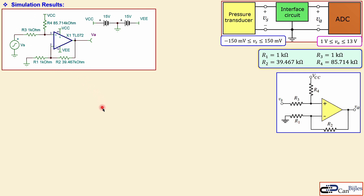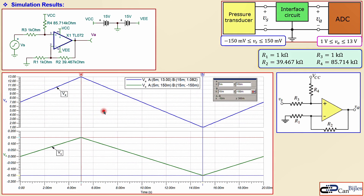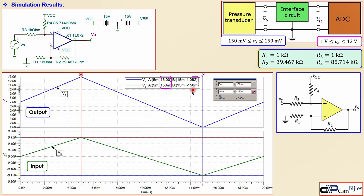Now let's look at the simulation results. This is the circuit in the simulator using the actual model of the op-amp TL072, with VCC = 15 V and VEE = −15 V, along with VCC for the resistor network. In the plot, the green trace is our input and the blue trace is the output of the interface circuit. Both are triangle waves — no shaping or distortion. The input peaks at ±0.15 V (150 mV) and the output reaches 13 V as required; however, the lower end gives 1.082 V — about 82 mV off from the target 1 V, but acceptable for all practical purposes.